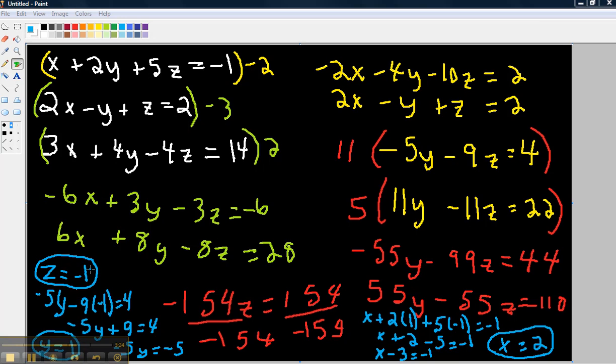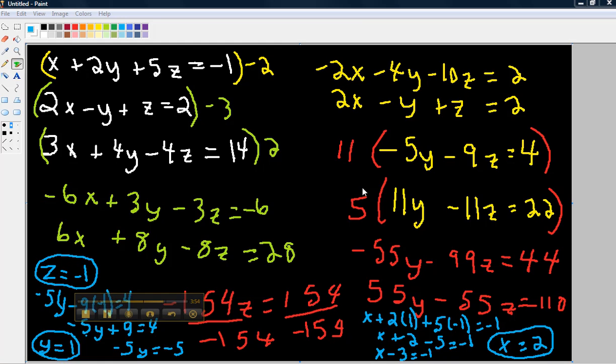Once I have my z, now I have one of the variables. Next thing you're going to do, you're going to take this z, start plugging it back in. We're going to plug it into one of these that had two variables. I think I chose this one to plug it into, and I'm going to solve it for y. So I'm going to take this, and I wrote it over here in the blue. Negative 5y minus 9 times negative 1 equals 4. Take this and solve it.